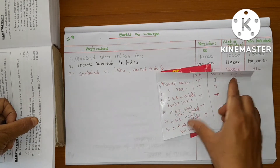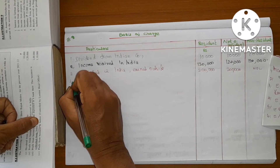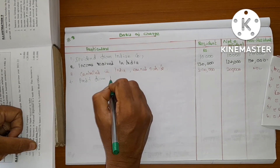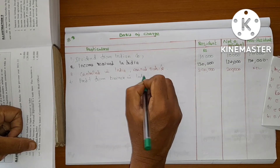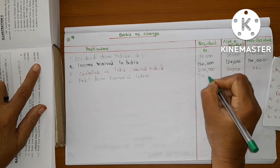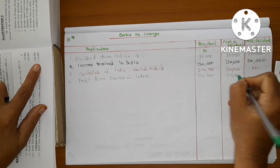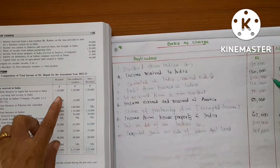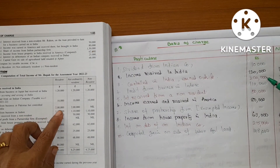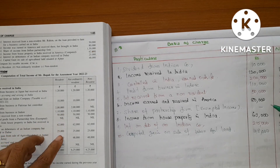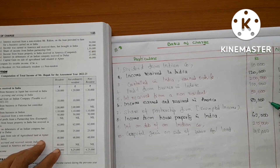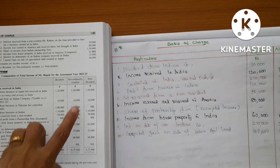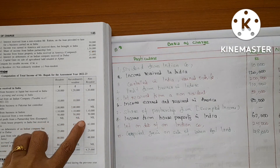So we will get the concept of tax. You can put the table in the same place. Profit from business in Indore — 1,10,000. That's right.